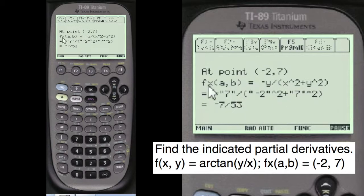Now if they asked you for F of Y, you'd go one step further. And that would be substituting this and you get minus 2 over 53. Pretty neat, huh?